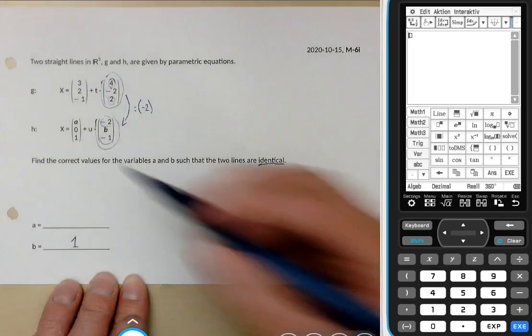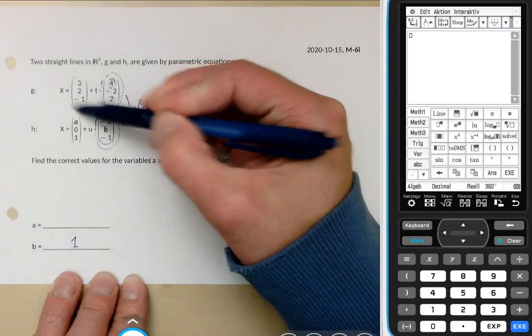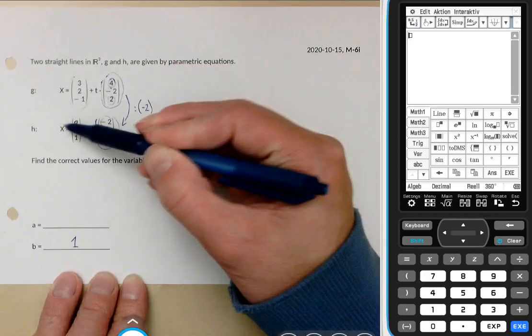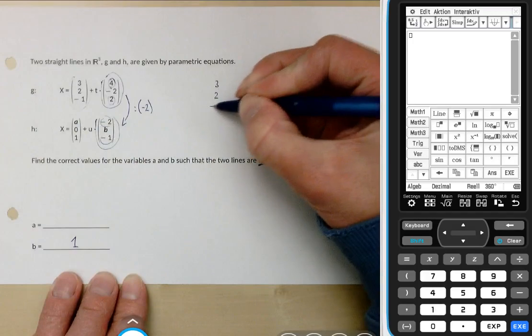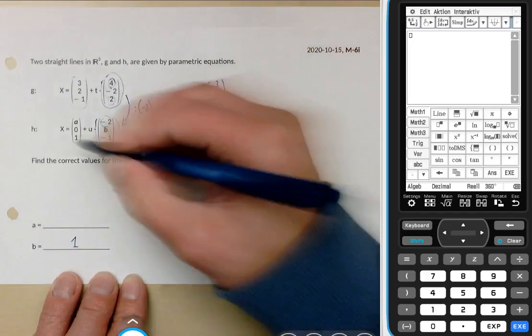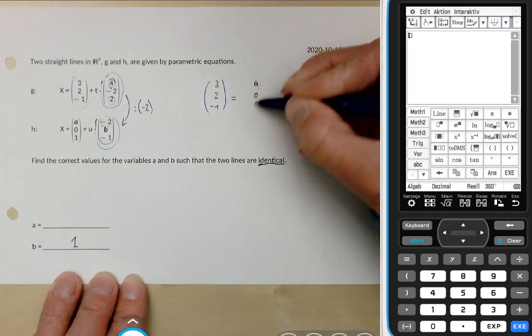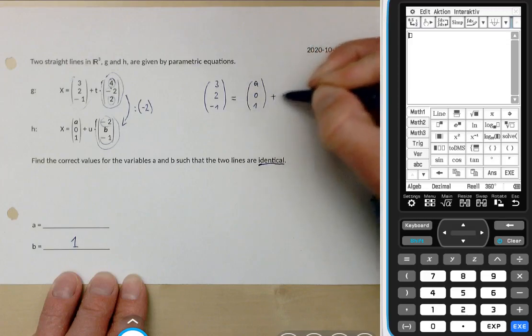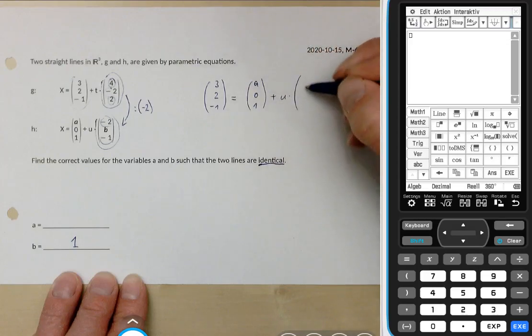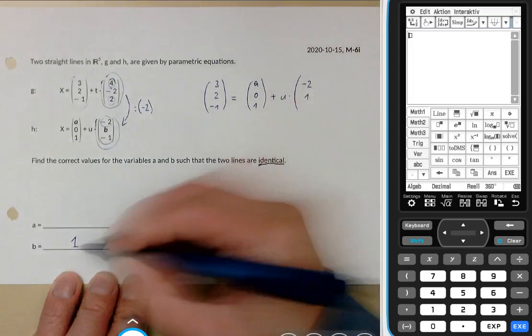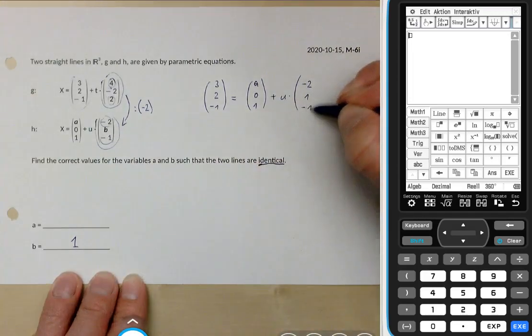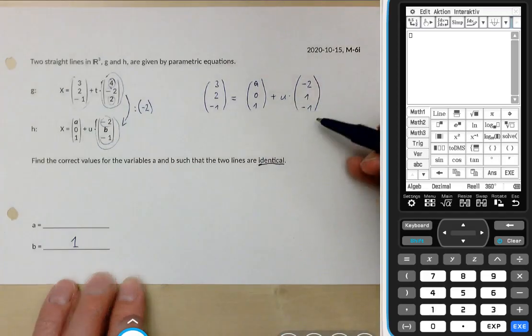How to find a? Now we have to plug the initial point of the first line into the equation of the second line. So it's (3, 2, -1) equals (a, 0, 1) plus u times (-2, 1, -1).